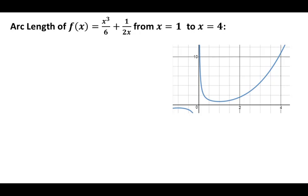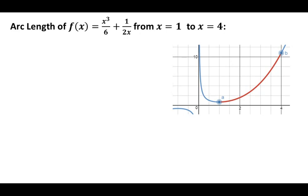Hello. Here we're going to find the arc length of our function f(x) = x³/6 + 1/(2x) from x = 1 to x = 4. Our function f(x) is shown in blue in the plot, and what we're trying to find is the length in red — this arc segment from a to b.